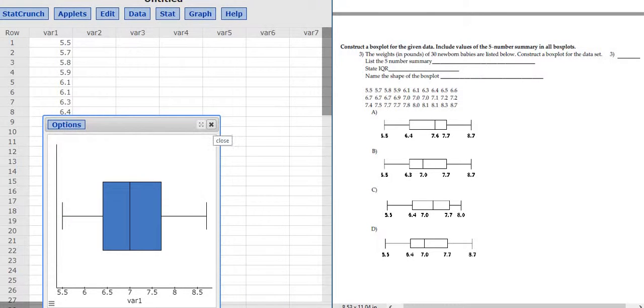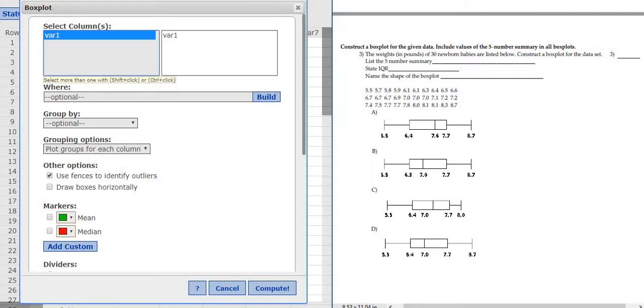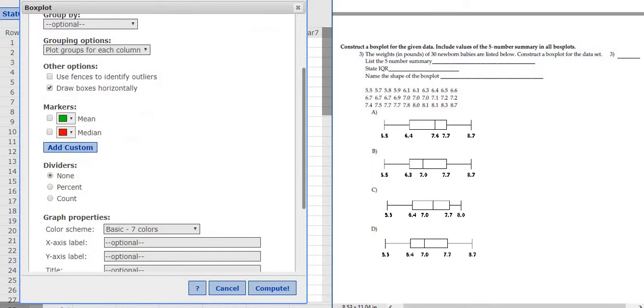Let me do that again. So you go to Graph, you go to Box Plot. You left-click on where it says Box Plot. Select Var 1, uncheck the Fences to Identify Outliers button, and then check where it says Draw Boxes Horizontally. Then just click Compute.